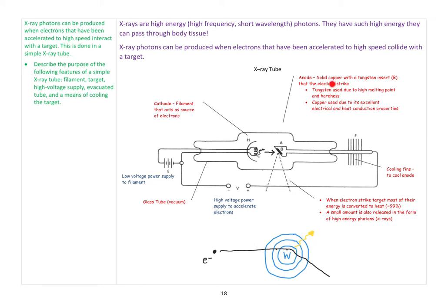Now a couple of things about this target or anode. It's normally made of solid copper with a little tungsten insert - that B is supposed to show the tungsten insert sitting in copper. Tungsten is used due to its very high melting point and hardness, so it won't be degraded too quickly by continual bombardment with high energy electrons. Copper is used to enclose it because it's an excellent electrical conductor - it needs to be hooked up to high voltage - but it's also a good heat conductor. The heat gets conducted down this copper piece, and we have these cooling fins here which have high surface area and help to cool down the anode because we get lots of heat produced.